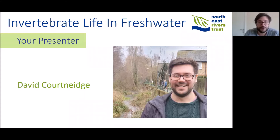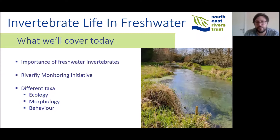I'm going to be talking about macro invertebrates in freshwater ecosystems today. A freshwater macro invertebrate is an invertebrate without a backbone — an animal generally larger than one millimetre in size — covering a large number of animals found in a freshwater ecosystem. I'll talk about their importance, how we monitor them through the Riverfly Monitoring Initiative, and then go through some taxa with interesting facts about their ecology, behaviour, and anatomy.